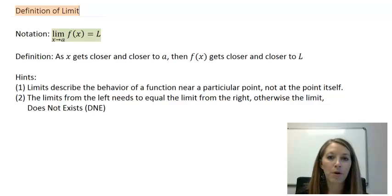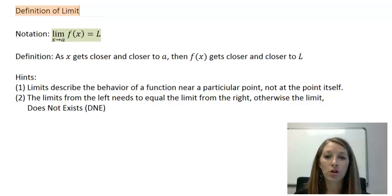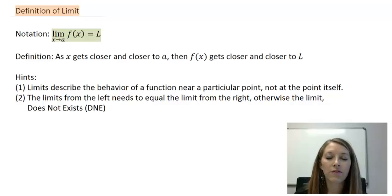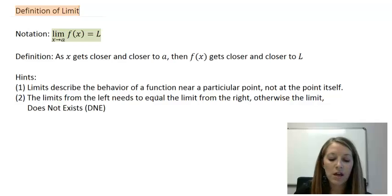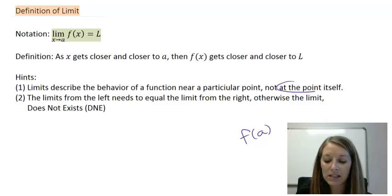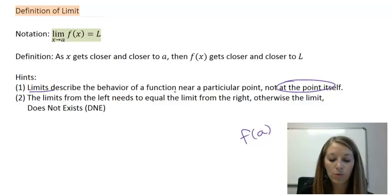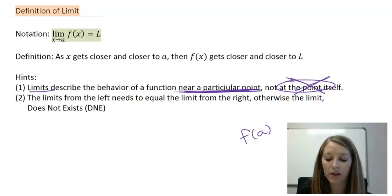The limit as x approaches a of our function f of x is equal to L if our function gets closer and closer to L as our x value gets closer and closer to a. We know the difference between limits and actual functions. If I wanted to know a function evaluated at a, that would be at the particular point itself. But the limit actually wants to know what's happening close to that particular point, not at the point all on its own.